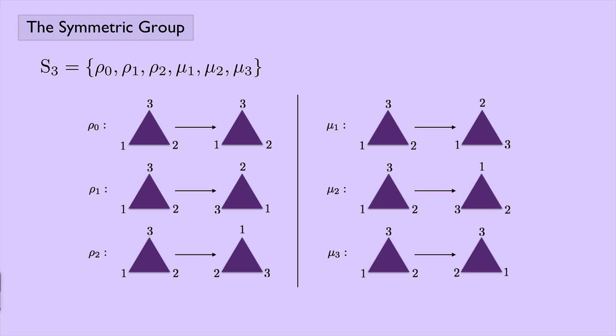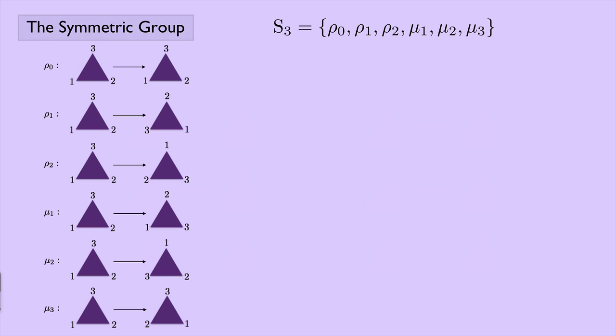So the notation here, S sub 3, suggests that maybe this might be a symmetric group. And if we think about 1, 2, and 3 as being the elements in that set that we talked about earlier, then you can see how we might have permutations of this set. So here are the elements written out again. And for each one of these elements that we earlier had identified as a symmetry of an equilateral triangle, let's try and write it in permutation notation.